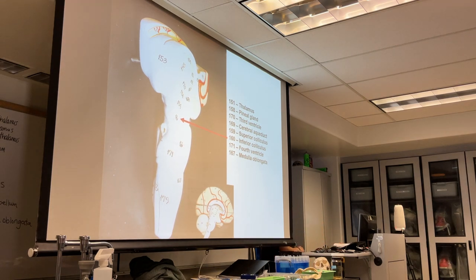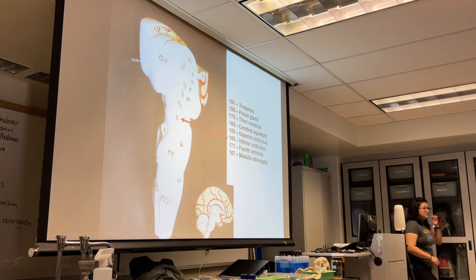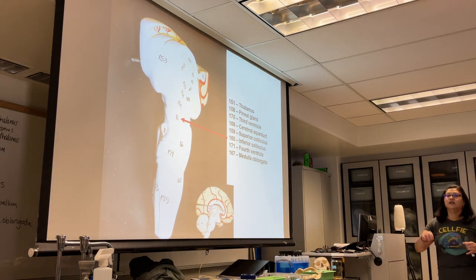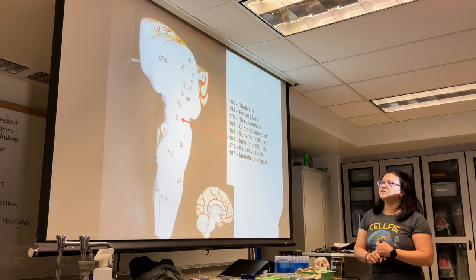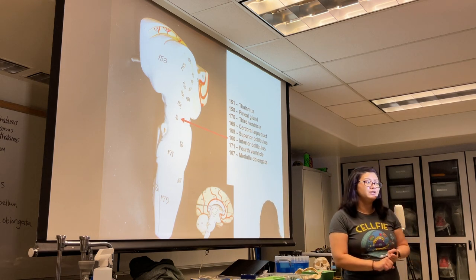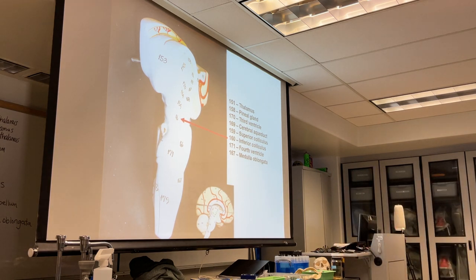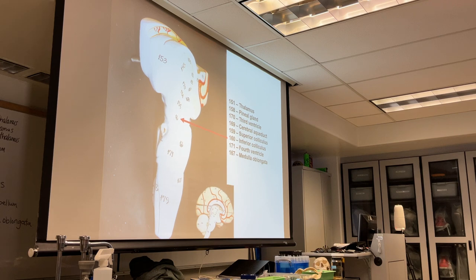At this point we've seen the third ventricle, the interventricular foramen, and the cerebral aqueduct. Now we're going to look at the fourth ventricle.